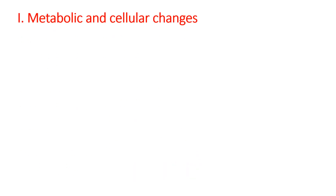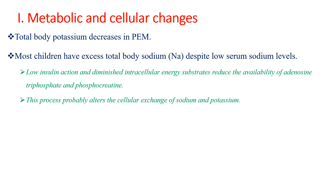The first is the effect of severe acute malnutrition on metabolic and cellular changes. During severe acute malnutrition, total body potassium decreases, and most children have excess total body sodium — hypernatremia and hypokalemia. But sometimes there might be low serum sodium level despite excess total body sodium, which may mask the overall increase in body sodium level. So don't depend on serum sodium level to estimate total body sodium in severe acute malnutrition. This is due to low insulin action and diminished internal cellular energy, which reduces the availability of ATP and phosphocreatine, and this probably alters the cellular exchange of sodium and potassium.